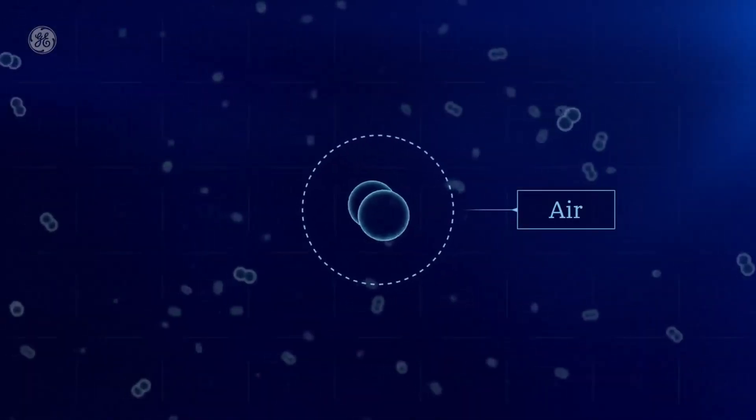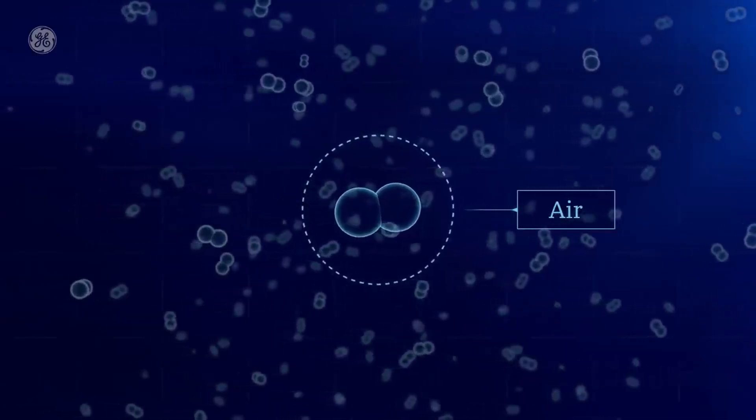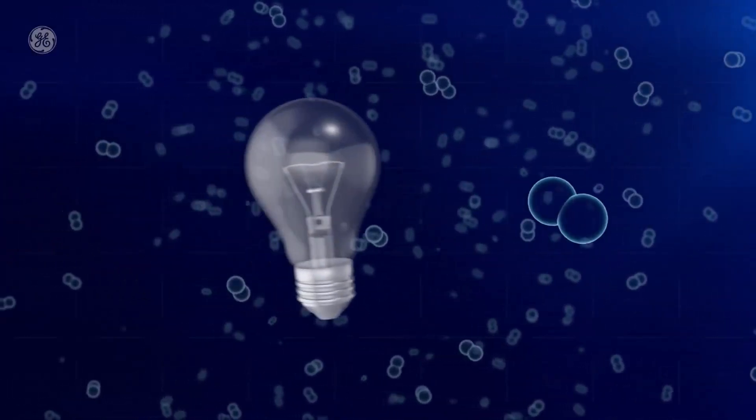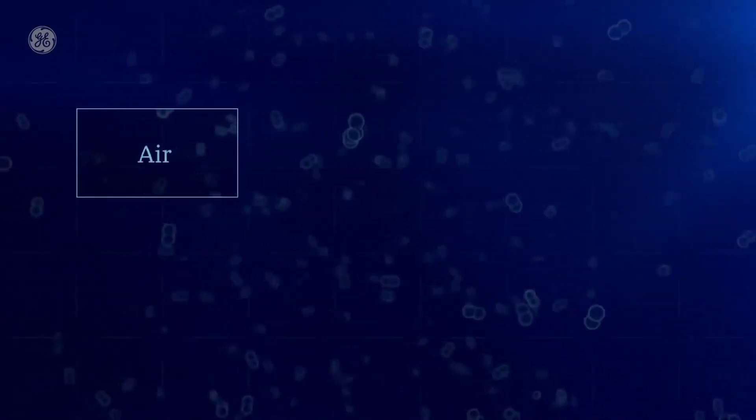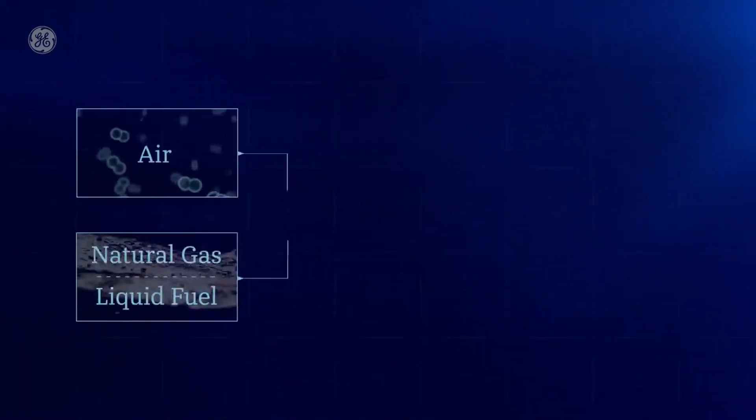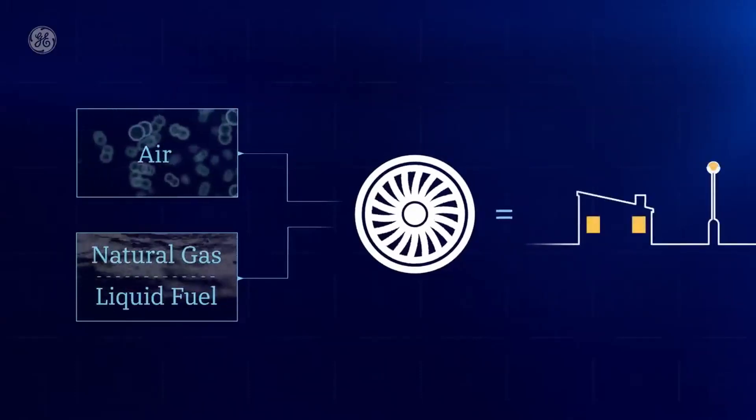Air. A lot of gaseous molecules floating all around us. It's great for breathing and it turns out it's great for getting lights turned on. That's because air, along with abundant natural gas or other fuels, are the ingredients that combine in a gas turbine to spin the generator that produces electric current.